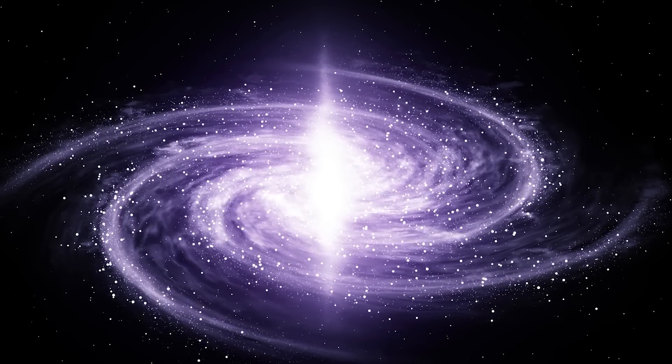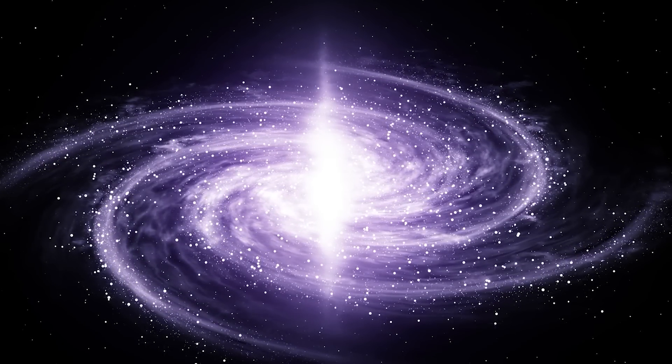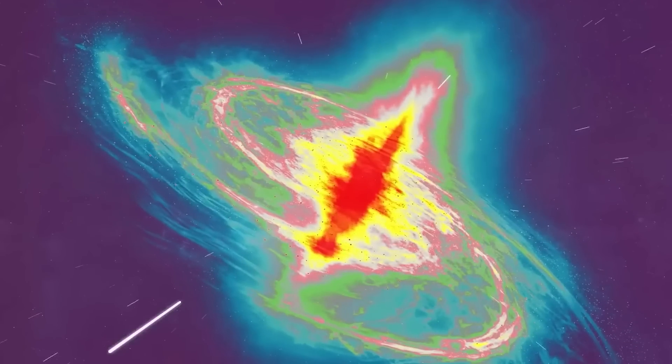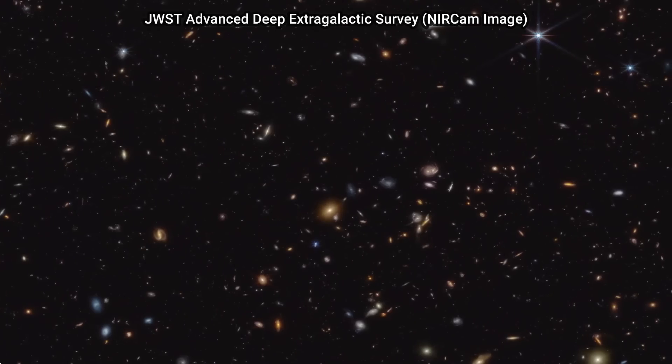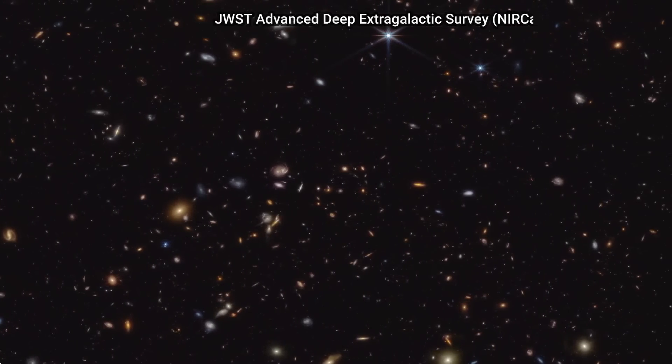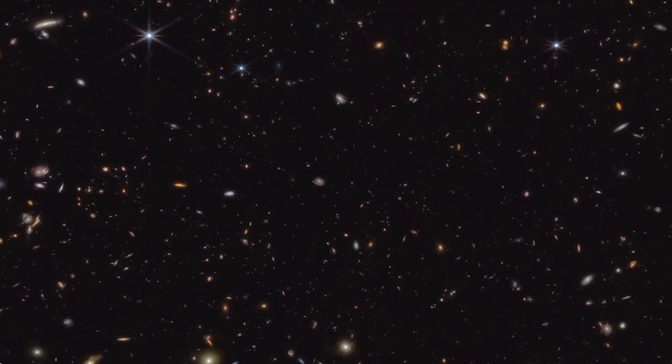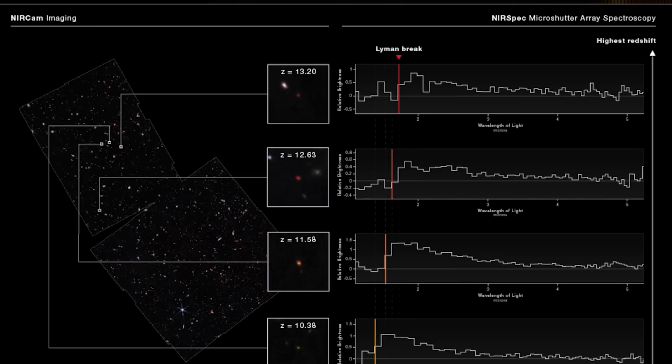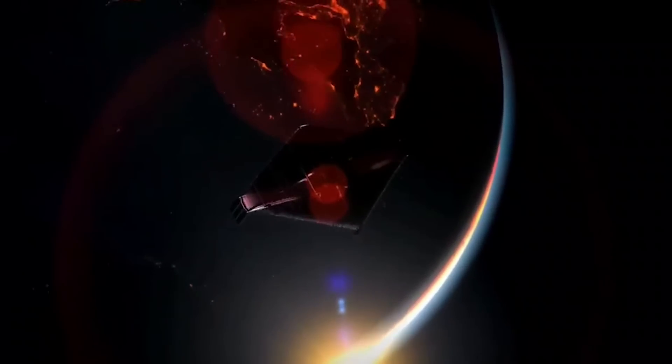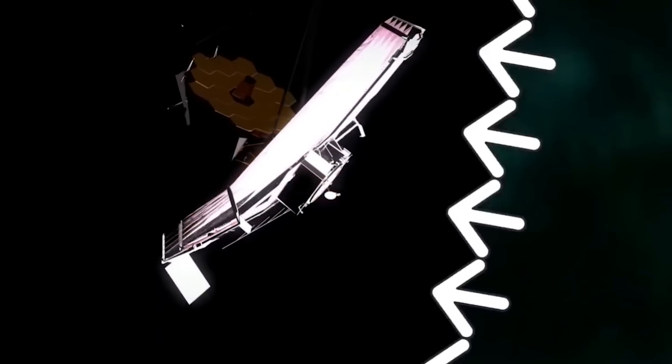James Webb's Advanced Deep Extragalactic Survey program is a leading initiative that uses imaging and infrared spectroscopy to study the evolution of galaxies in the early universe. JADES has made significant discoveries, including the identification of hundreds of galaxies that existed when the universe was very young. These galaxies, some of the oldest and most distant ever observed, provide key information about the formation of the first stars and galaxies.